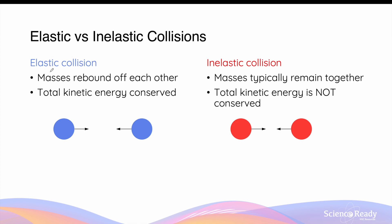In elastic collisions, masses will rebound off each other after they collide. What makes elastic collisions unique is that the total kinetic energy of the system before and after the collision is conserved. This means the total kinetic energy of the objects before the collision should equal the total kinetic energy of the objects after the collision.